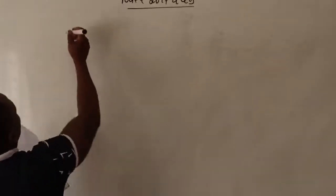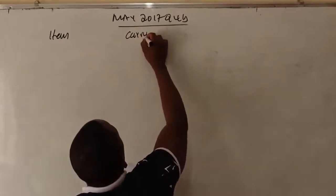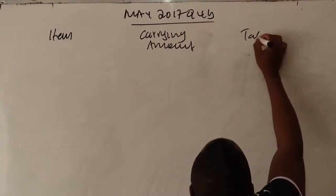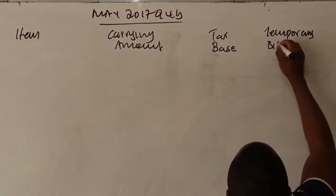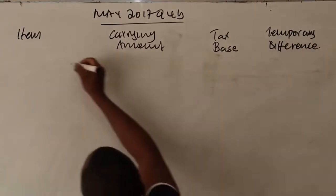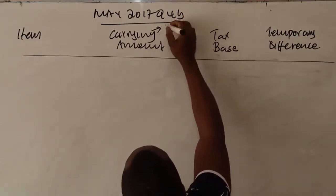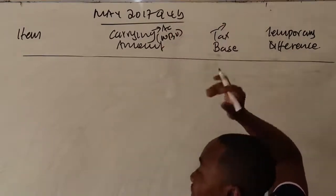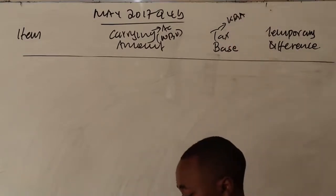To determine the deferred tax, you get your item, then compare the carrying amount and the tax base. The difference between the two is the temporary difference. The carrying amount is determined by the accountant and equals net book value. The tax base is determined by the taxman — the KRA — and is based on the original cost.